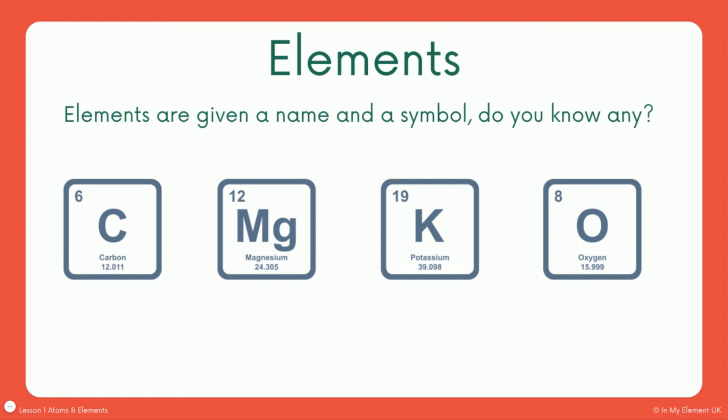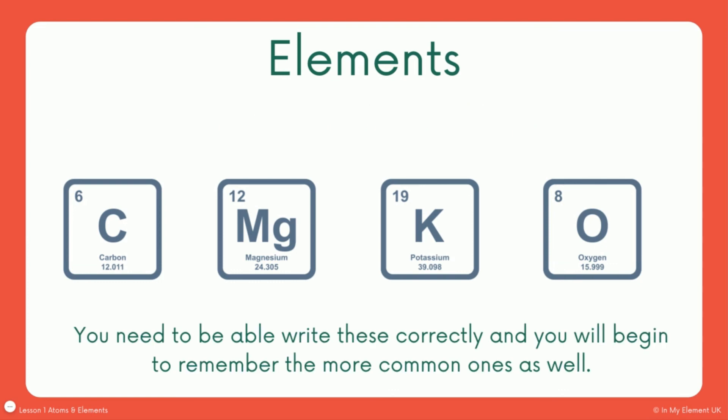What you also need to be aware of is that when you've got a symbol like magnesium, it's got two letters. The first letter is always a capital letter and the second one is a lower case letter. You will also notice that it's not MA. It's not always the first two letters of the element. So little reminder there that you need to be able to write these correctly. And as we've already mentioned, you'll remember some of the more common ones as well, certainly oxygen and carbon too.